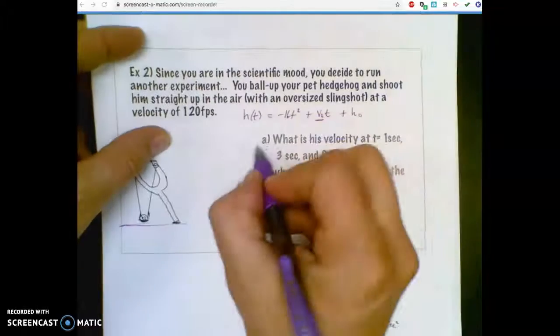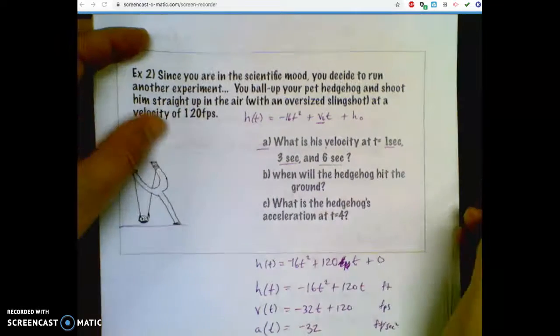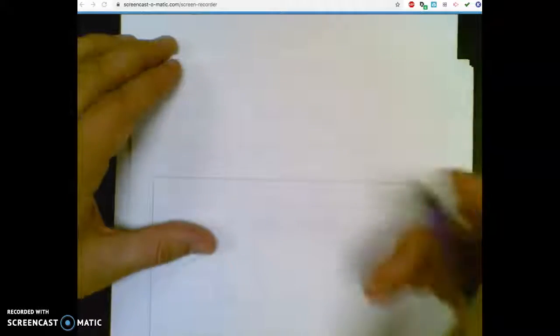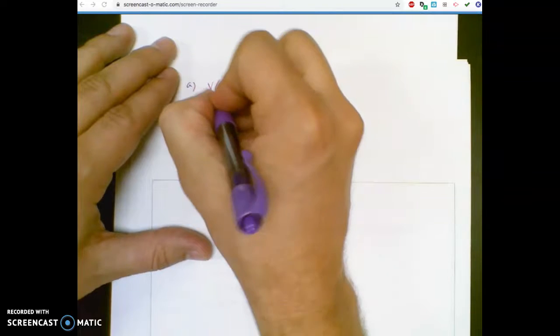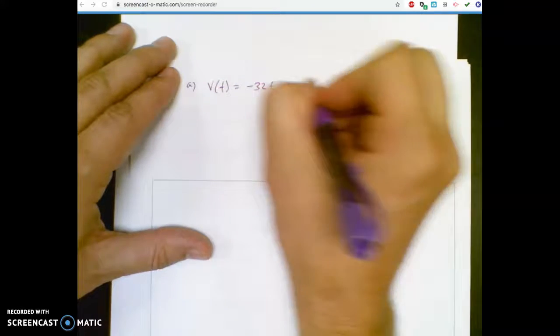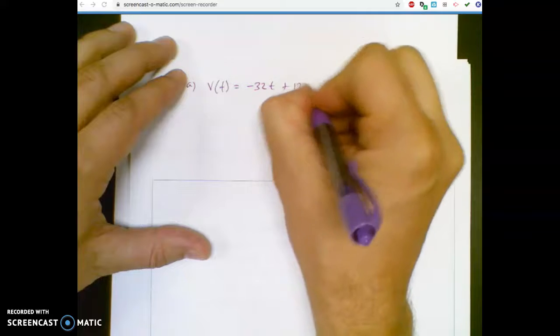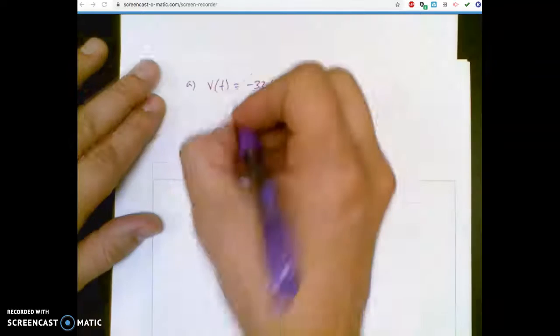Alright, so moving on, let's try these out. Let's answer the questions. First question is, what is his velocity at 1 second, 3 seconds, and 6 seconds? That's pretty easy. I just got to use the right equation. So for part A, I'm going to use my velocity equation, which was negative 32t plus 120 on the other page. And it's going to be feet per second for my units.